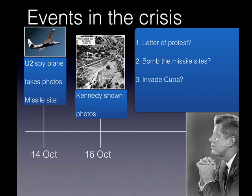He could launch a military invasion of Cuba, which would clearly spark a war — the Soviets could respond with an invasion of Berlin or West Germany. This would definitely remove all the missiles but carried very risky potential ramifications. Finally, he could impose a naval blockade of Cuba. This would not remove the missiles but would prevent any more arriving, and would be a stronger action than just a letter of protest.